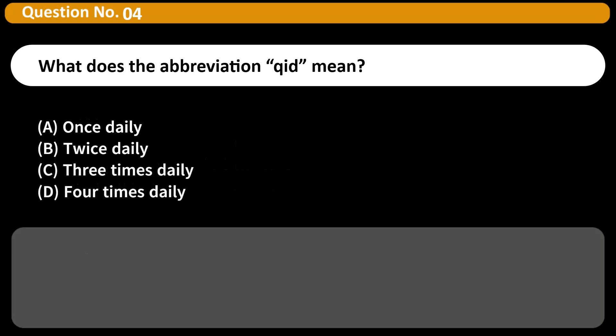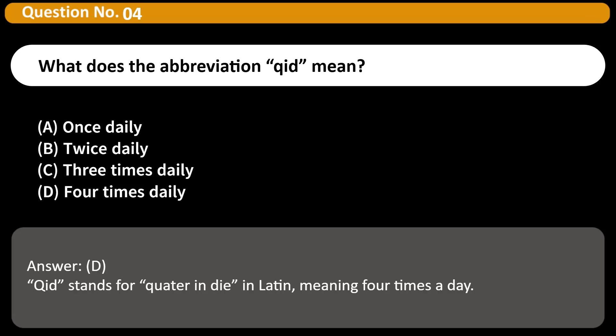What does the abbreviation QID mean? A. Once daily. B. Twice daily. C. Three times daily. D. Four times daily. Answer: D. QID stands for 'quater in die' in Latin, meaning 4 times a day.